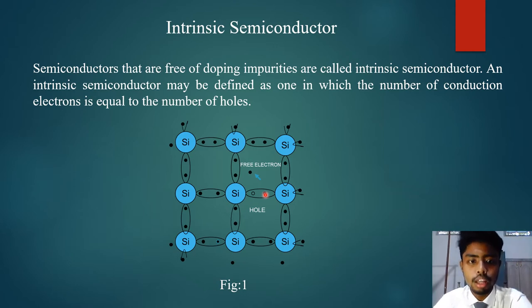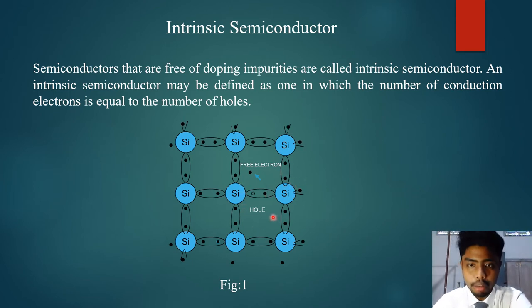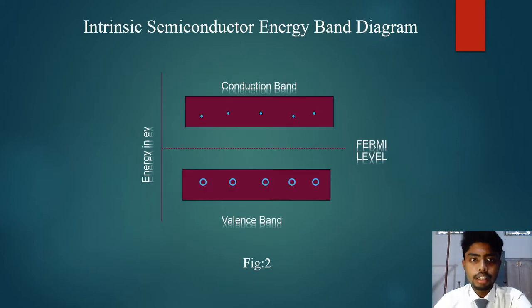Alternatively, an intrinsic semiconductor may be defined as one in which the number of conduction electrons is equal to the number of holes. In this diagram, you can see that the number of electrons is equal to the number of holes. We turn to the next slide, which is the intrinsic semiconductor energy band diagram.